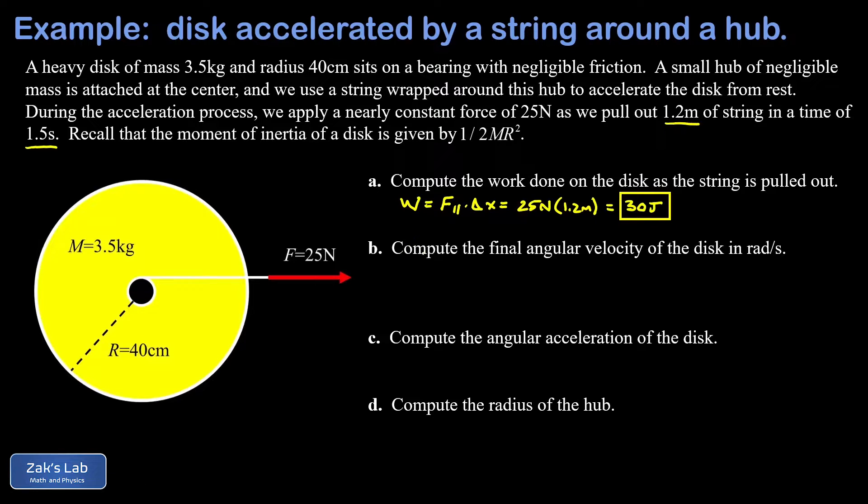In part B, we want to get the final angular velocity of the disk. This is just a work energy theorem problem. The work that we put into it is reflected in the rotational kinetic energy of the disk. There was no initial rotational kinetic energy. So the work that we put in is equal to the final kinetic energy. And that's given by one-half I omega squared.